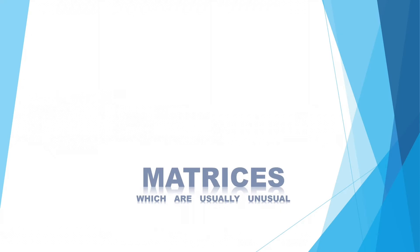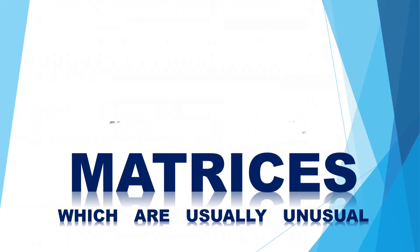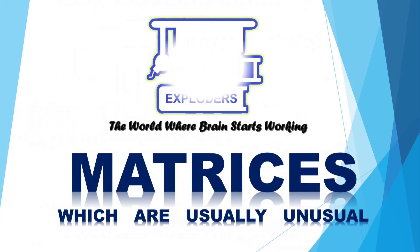You are watching Brain Exploders, the world where brain starts working. We have to find a matrix A such that A² is equal to A but is not identity matrix.